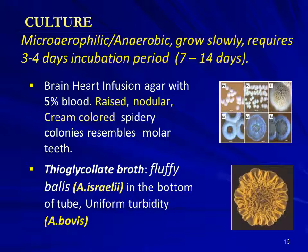A. israelii shows growth at the bottom of the thioglycollate tube because these organisms are anaerobes and never come near the environmental surface where oxygen is abundant. Uniform turbidity is produced by A. bovis, showing it is a somewhat aero-tolerant species.